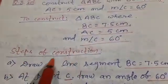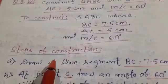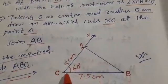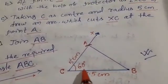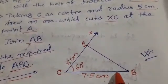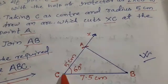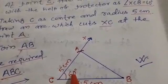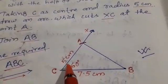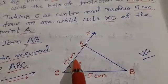Steps of construction are written here. At first we see the construction. First, draw a line segment BC equal to 7.5 cm and at C draw an angle of 60 degree with the help of protector or by the use of compass.